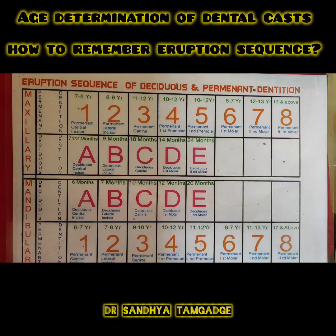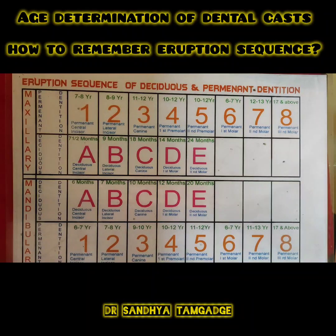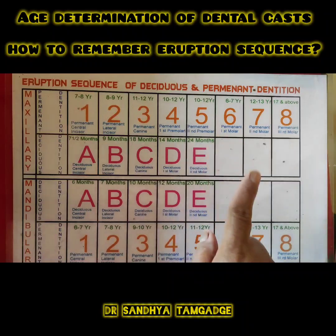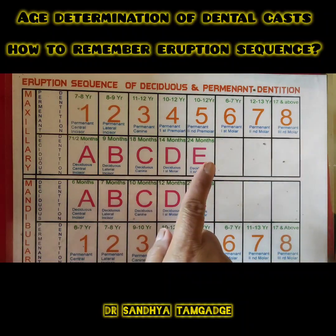Once you finish all the carving exercises, you need to know the age determination of a cast — a very important exercise in forensic science. To master this age determination exercise, you should know the eruption pattern of all the teeth.